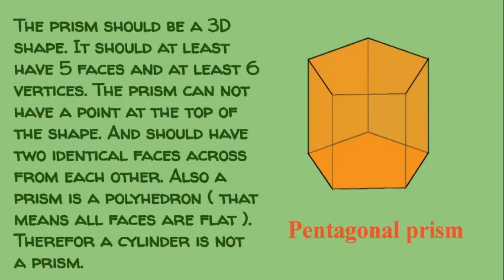The prism should be a 3D shape. It should at least have five faces and at least six vertices. The prism cannot have a point at the top of the shape and should have two identical faces across from each other. Also, a prism is a polyhedron, that means all faces are flat. Therefore, a cylinder is not a prism, just to clear that up.